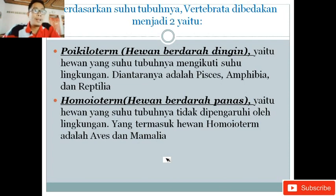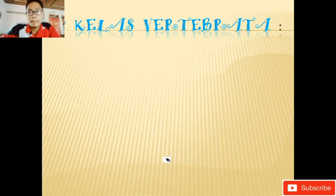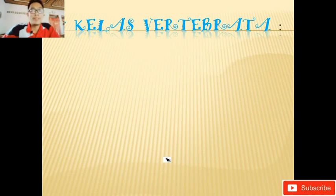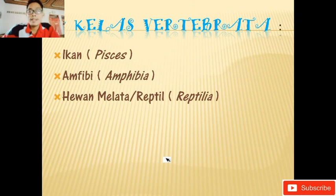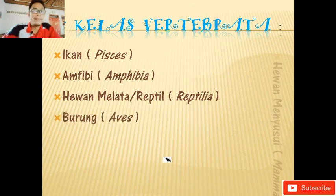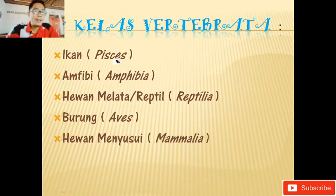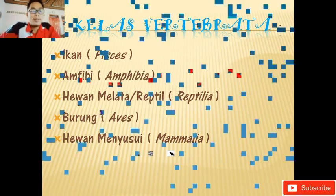Lima kelas pada vertebrata dapat dihafalkan dengan singkatan P-A-R-A-M, PARAM. P yang pertama adalah Pisces, A Amphibia, R Reptilia, A Aves, M Mamalia. Jadi singkatannya PARAM. Kita bahas satu per satu, dimulai dari ikan atau Pisces.